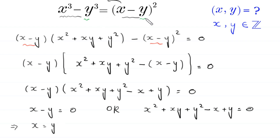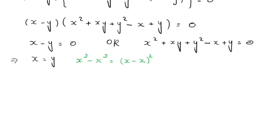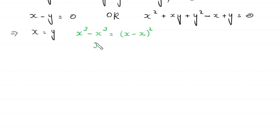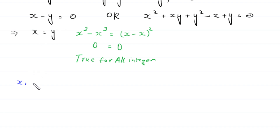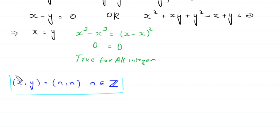If in the original equation we replace every y with x, then this will become x cubed minus x cubed is equal to x minus x whole squared. The left hand side equals 0 and the right hand side equals 0, so this is true for all integers. From Case 1, we get the solution x, y is equal to n, n where n is any integer.